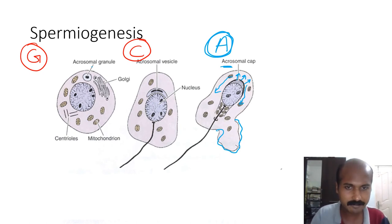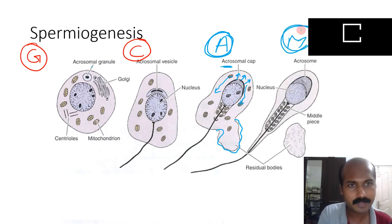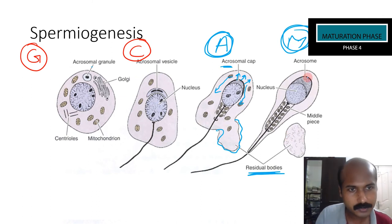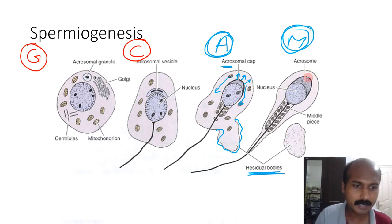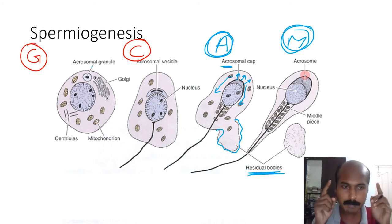The last phase is the maturation phase. The cytoplasm clump forms a residual body — considered wastage — which is removed. The acrosome is now very close to the plasma membrane; only a thin film of cytoplasm separates the plasma membrane, the outer and inner acrosomal membranes, and the nuclear membrane.